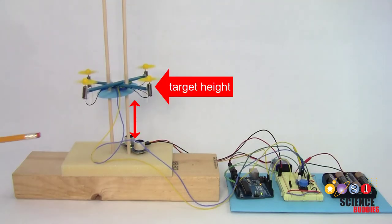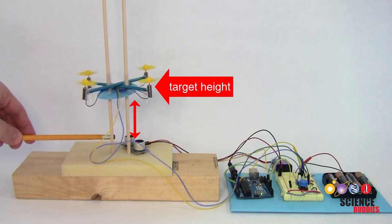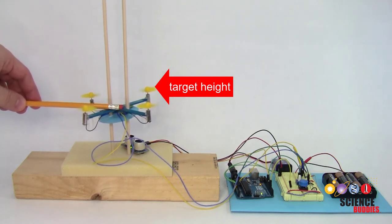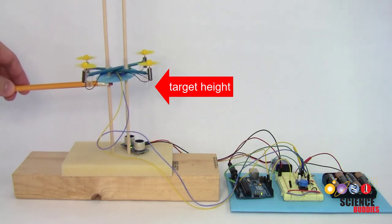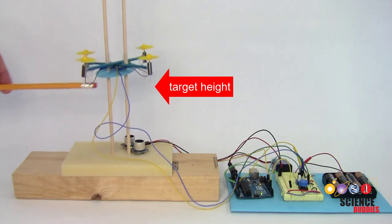The ultrasonic sensor measures the drone's actual height. If the actual height is too low, it increases the speed of the motors, making the drone fly up. If the actual height is too high, it decreases the speed of the motors, making the drone fly down.